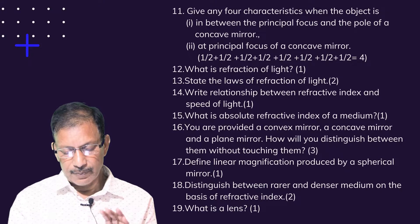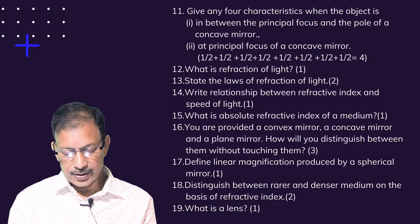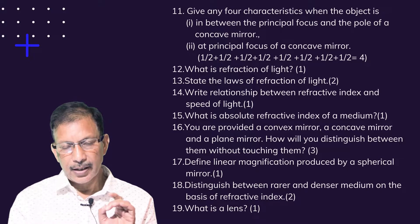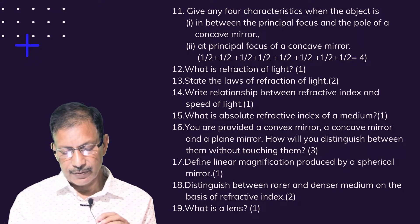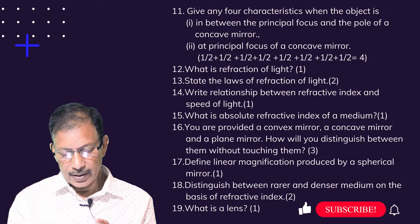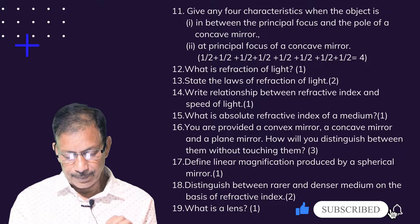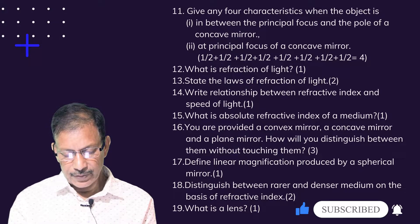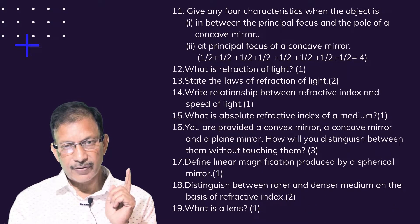State the two uses of convex mirror and concave mirror. Why is a concave mirror called the converging mirror? Name the two types of mirror which always form a virtual image. Give any four characteristics when the object is between the principal focus and the pole of a concave mirror, and at the principal focus of a concave mirror. What is refraction of light? State the laws of refraction of light. Write the relationship between refractive index and speed of light. What is the absolute refractive index of a medium? How will you distinguish between a convex mirror, concave mirror, and plane mirror without touching them? Define linear magnification produced by a spherical mirror. Distinguish between a rarer and denser medium on the basis of refractive index.